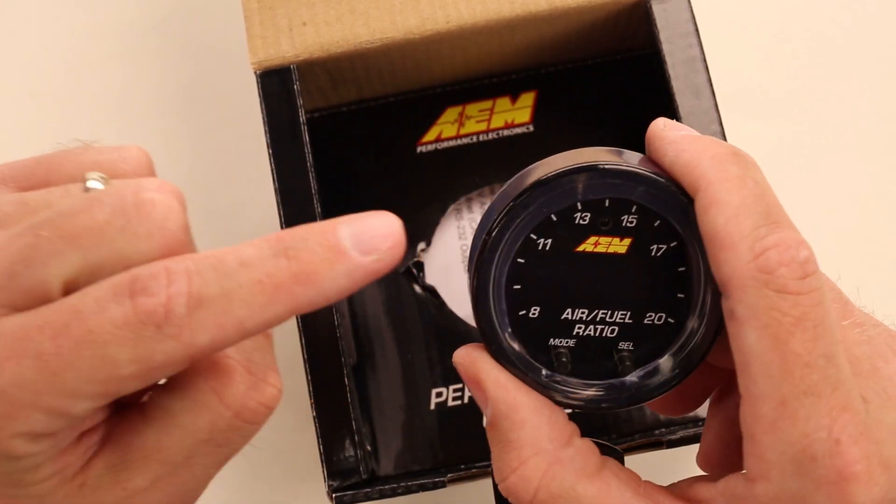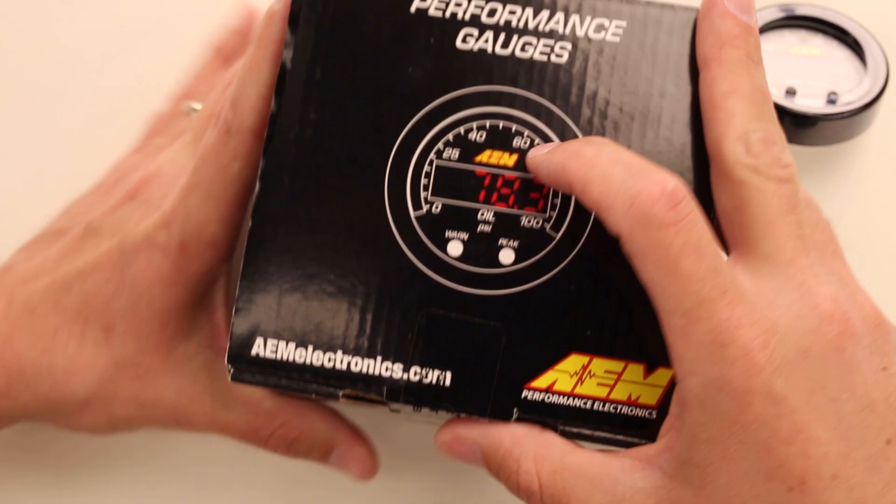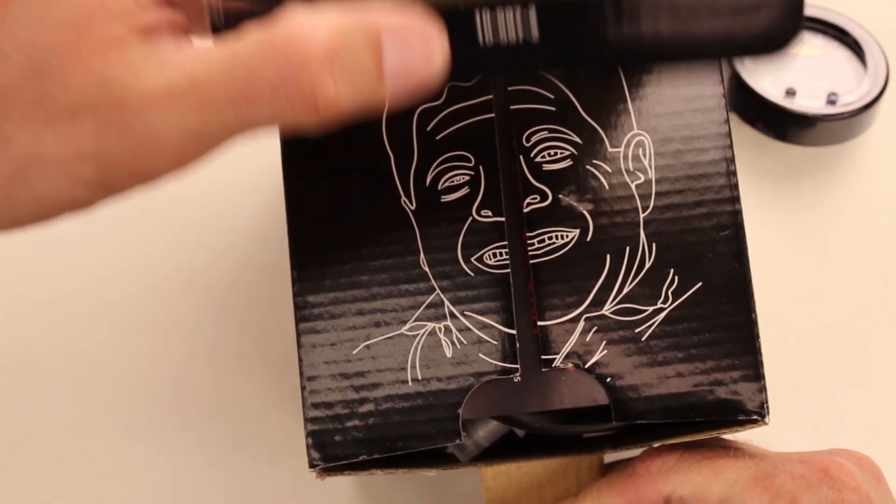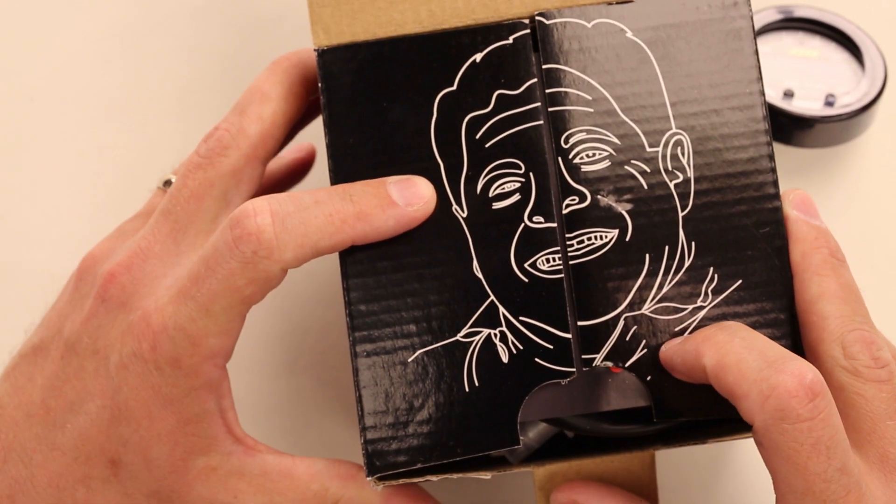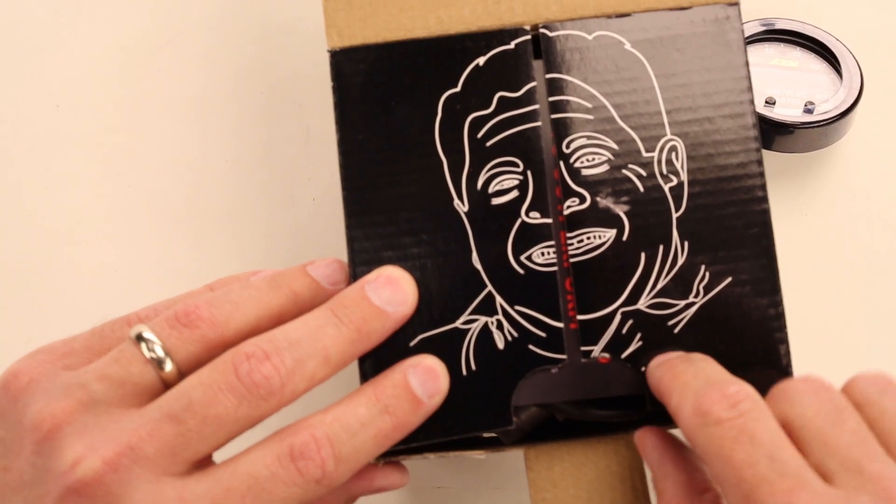So there's the gauge. Base gauges have a black bezel, black face. Now, the rest of the kit is on the other side of the box. And right here, a little Easter egg, that's JC. He's the founder of AEM, still actively involved with the company. And he comes in every box.